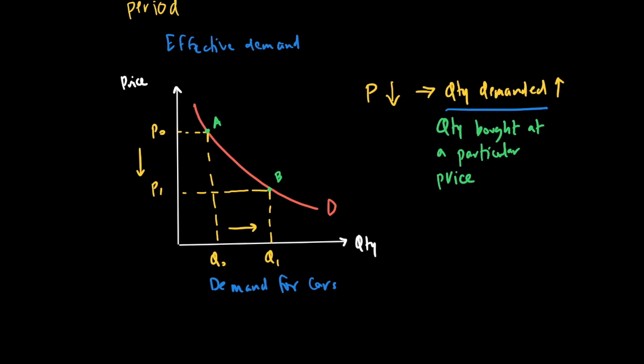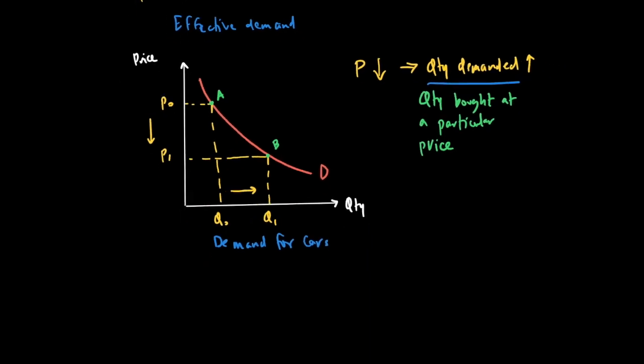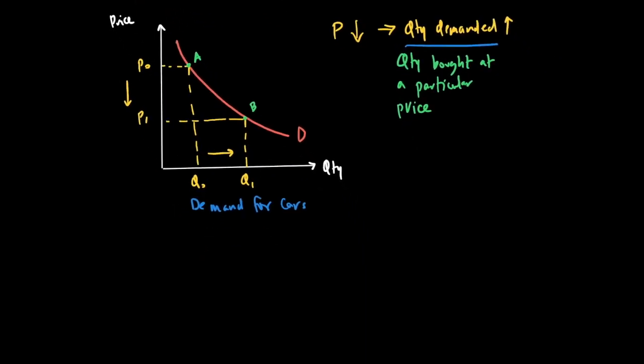The demand curve shows you the relationship between price and quantity, while the quantity demanded is the quantity bought at a particular price. That's an important distinction. We also want to talk about why the demand curve is downward sloping.